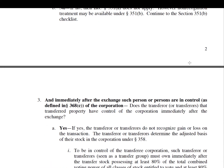The third requirement is that immediately after the exchange, such person or persons are in control of the corporation. This dealt with the immediately after requirement, as well as what exactly control is — which we learned is 80% or more of all classes of stock and all voting classes of stock. If requirements one and three are met, you're on your way to non-recognition. If you fail either requirement one or three, you're not going to get non-recognition treatment. If requirement two — solely in exchange for stock, no boot — is met, then 351A applies.